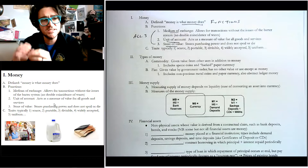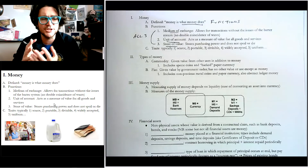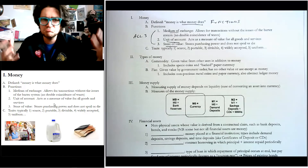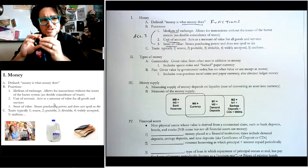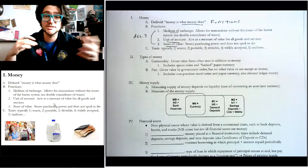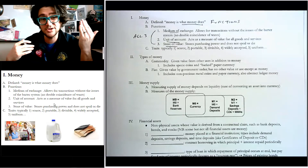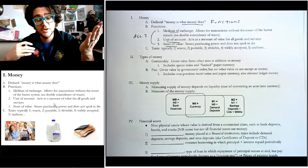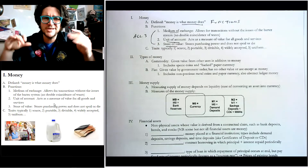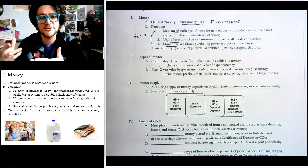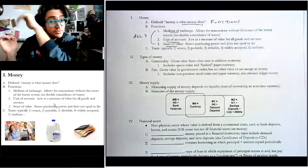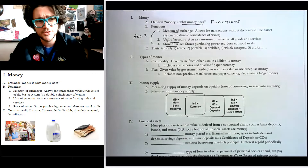The third function is store of value. This is the idea that the money in your wallet will generally have the same value tomorrow, next week, six months from now that it did today. Inflation will slowly erode that store of value, and you don't want too much inflation because it harms the unit of account measure — you can't tell how much stuff is worth — and it also harms the store of value. Generally speaking, even low levels of inflation are okay in terms of store of value.